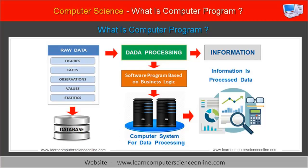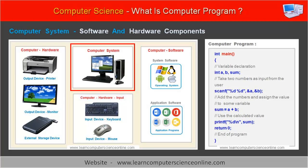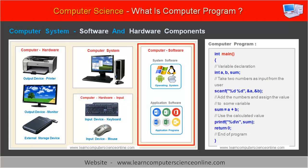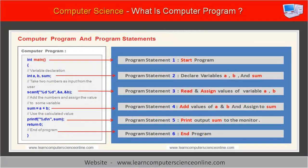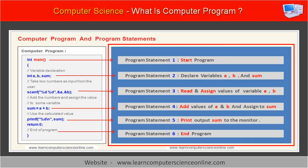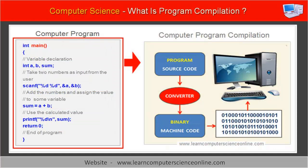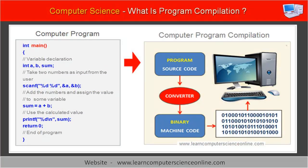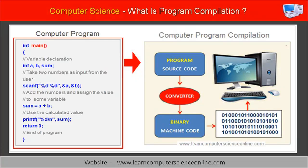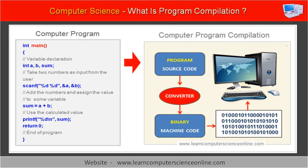The computer system consists of two essential components, which includes hardware and software components. The software components are computer programs, which consist of a set of instructions that directs the computer system hardware components to perform the desired operations. The computer system interprets these program instructions and then performs the desired operations by executing the program instructions one by one.